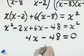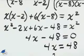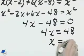Adding 48 over to the right-hand side, 4x equals 48, and then dividing by 4, x is equal to 12.